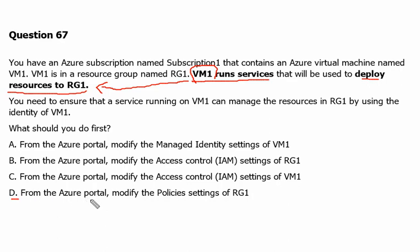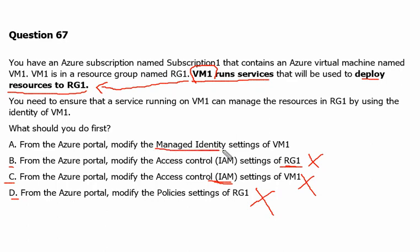Starting from option D: modifying a policy setting in the Azure portal has nothing to do with virtual machine identity. Option C, modifying access control in the Azure portal, has nothing to do with it either — that is for providing access to a user. Option B also involves access control on Resource Group 1, but Resource Group 1 is not running any service — the virtual machine is. Option A, from the Azure portal modify the managed identity settings of VM1, is correct. We can associate a managed identity with the virtual machine, and that identity can authenticate to Resource Group 1 and perform the required actions.